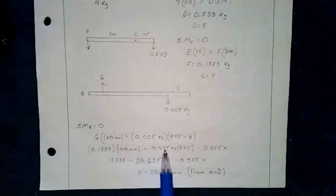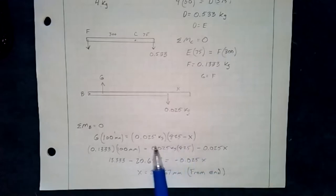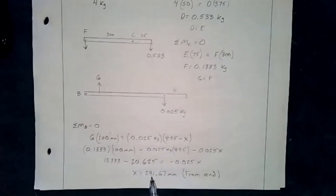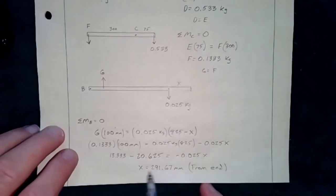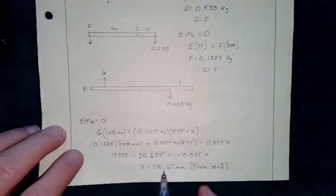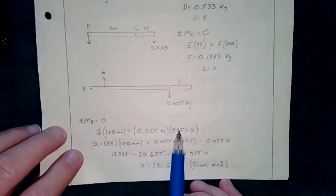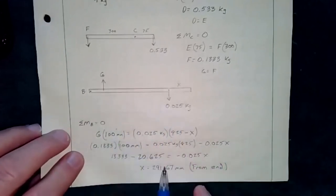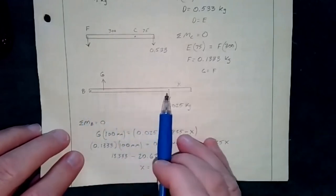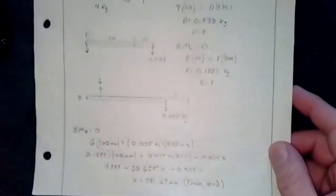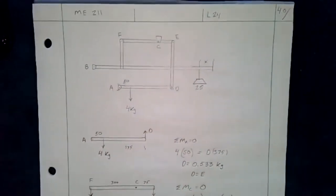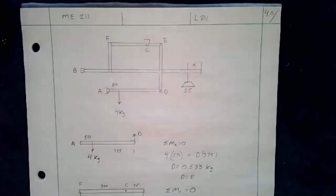Setting up the final balance: G × 100 = 0.025 × (825 − x). Substituting G = 0.133 kg: 0.133 × 100 = 0.025 × (825 − x). Solving gives x = 291.67 mm from the end. This can be verified by plugging back in. The problem is an interesting practical application of mechanical advantage through a series of moment balances.